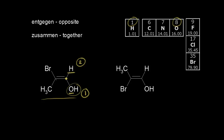Now let's look at the left side of our double bond. We look at the atoms directly bonded to that carbon — there's a bromine and there's a carbon. Carbon has an atomic number of six and bromine has an atomic number of 35. The higher the atomic number, the higher the priority, so bromine gets higher priority. Bromine gets a number one and we give a number two to the methyl group.